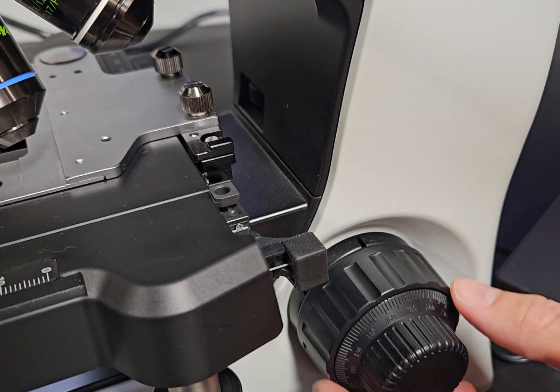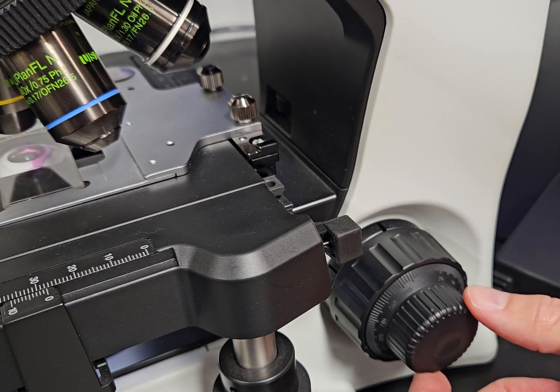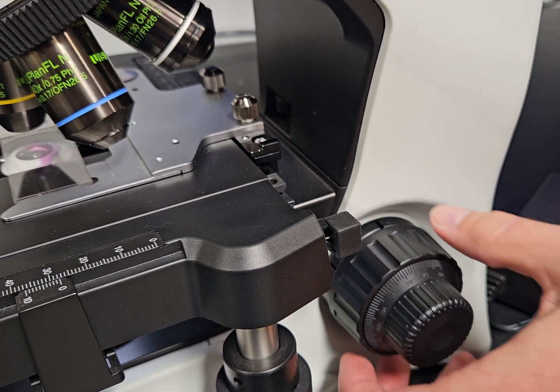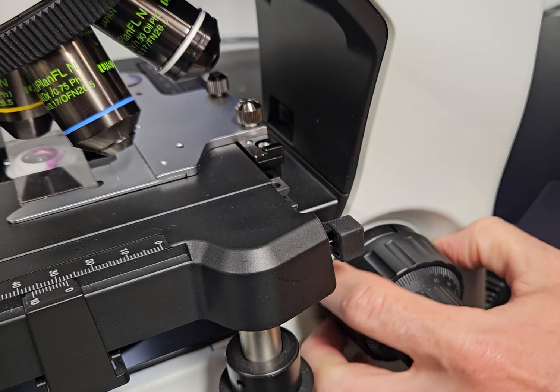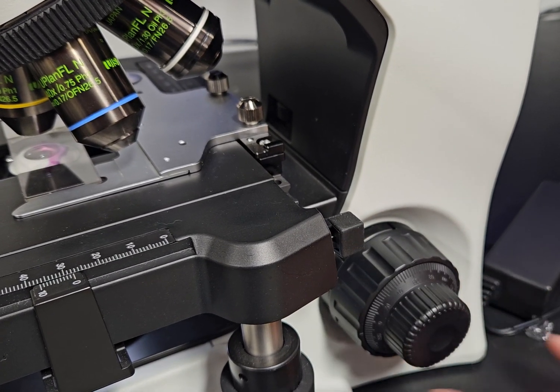This right here, if your scope is drifting, in other words if this is rolling without your hand on it, without turning the knob, sometimes you need to tighten this ring up on the inside. Turn it towards the wall and it'll correct that issue.